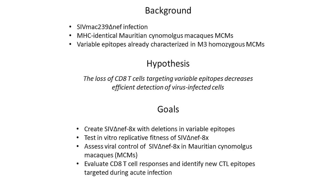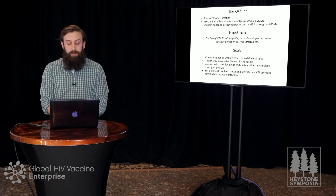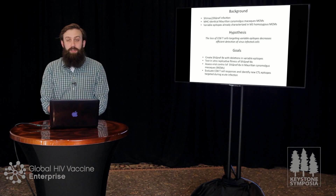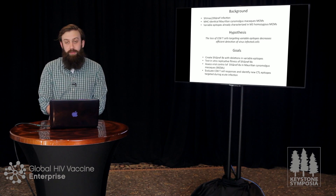To test this hypothesis, we are doing the following things. First, we'd like to create SIV-Delta-NF-8X, a derivative of SIV-MAC239-Delta-NF with point mutations in the eight epitopes restricted by the M3 MHC haplotype that are known to accumulate variants. Throughout this talk, I will refer to SIV-Delta-NF-8X as the 8X virus, and SIV-MAC239-Delta-NF as simply wild-type Delta-NF.